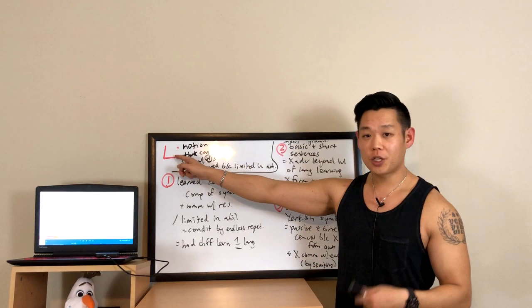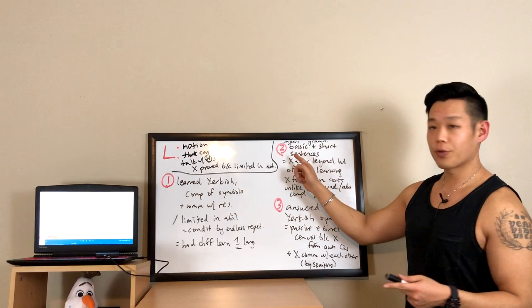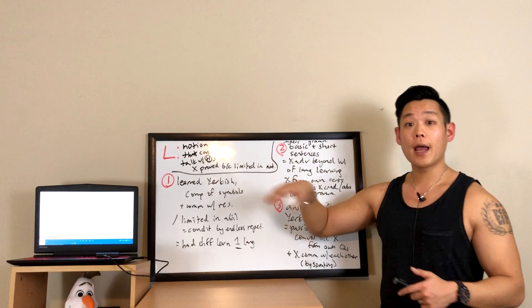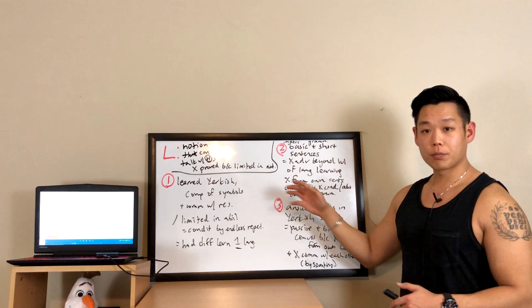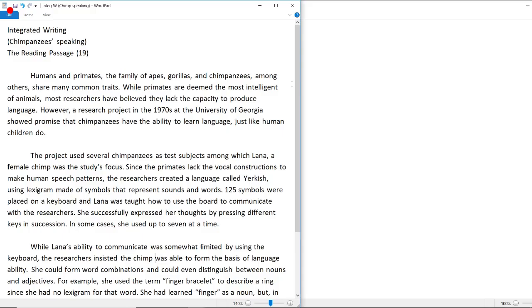Change the L to an R because it's supposed to be the reading's opinion — one for the first body paragraph, two for the second, and three for the third. This is your note-taking diagram for the reading and the lecture, because both of them have an opinion and three different parts.